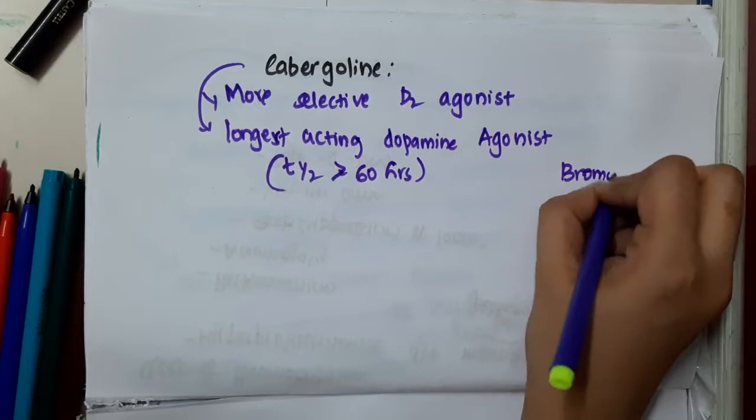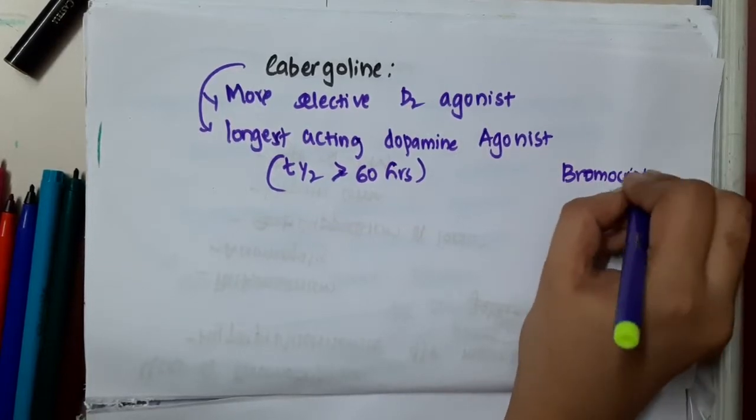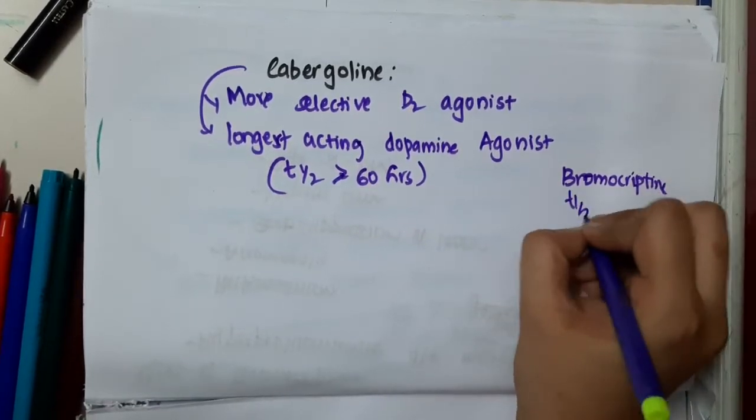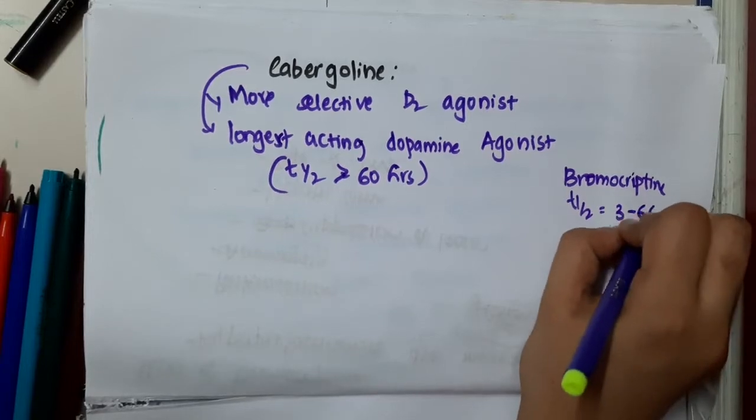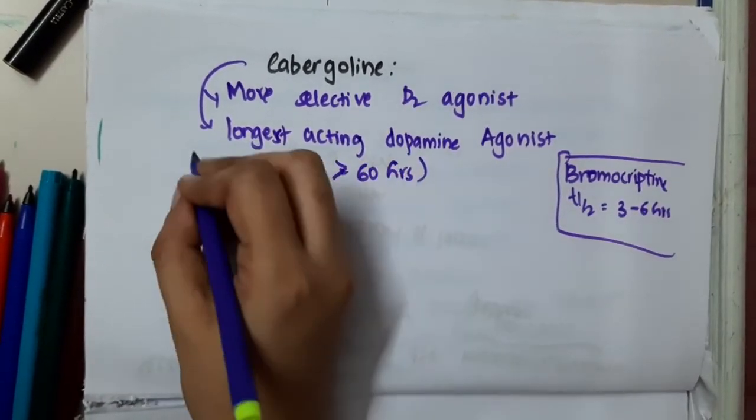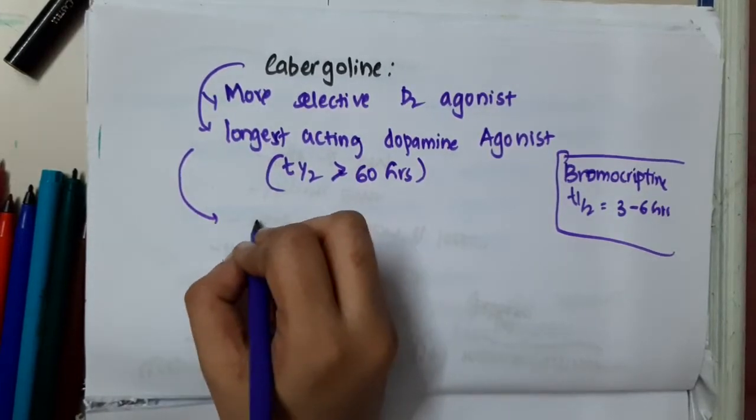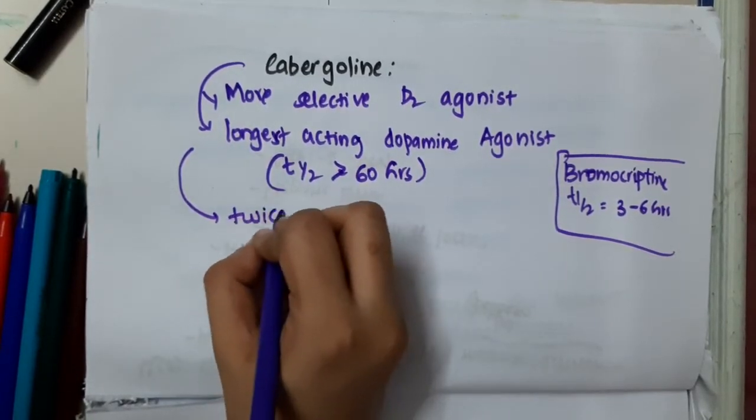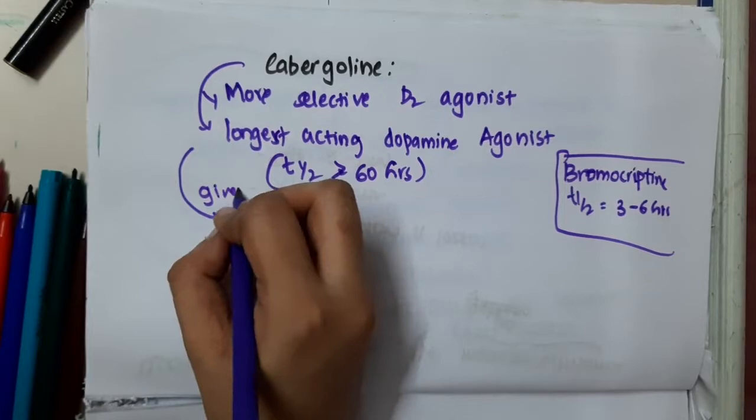Bromocryptin, if you see, has a half-life of 3 to 6 hours. But if you compare it with cabergolin which has a half-life of 60 hours, because it has a half-life of 60 hours, it is given twice weekly.